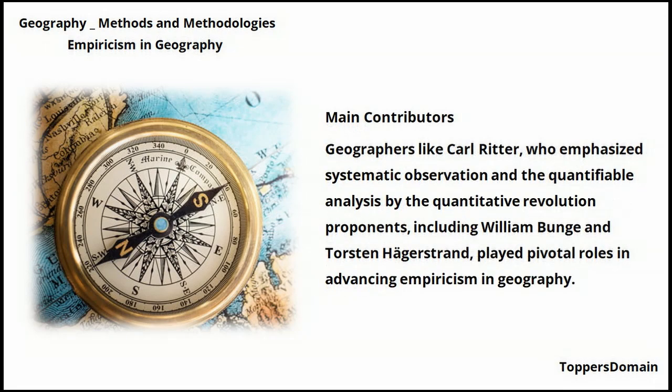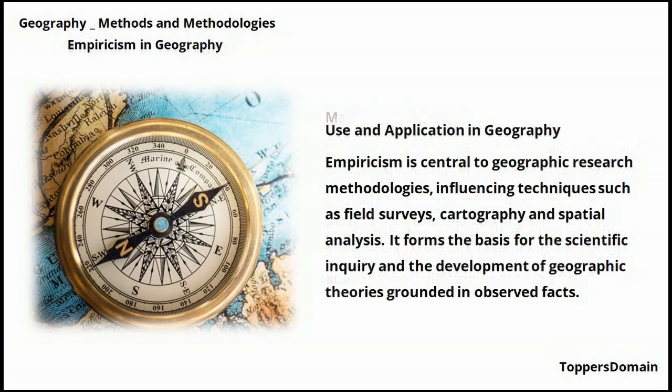Geographers like Karl Ritter, who emphasized systematic observation and the quantifiable analysis, along with quantitative revolution proponents including William Bunge and Torsten Hagerstrand, played pivotal roles in advancing empiricism in geography.